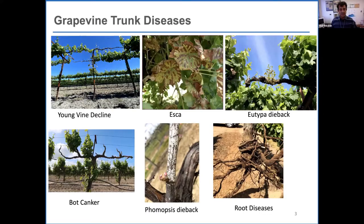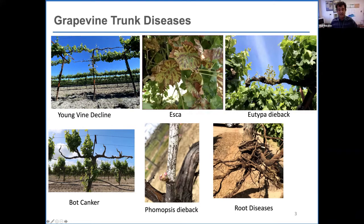Some general common information about grapevine trunk disease — I'm sure you all know, but I just want to remind you what they are and how they affect the grapevine. Grapevine trunk diseases are an umbrella of multiple diseases, including young vine decline and ESCA, Eutypa dieback, butt canker or Botryosphaeria canker, Phomopsis dieback, and some root diseases caused by the black foot disease group of pathogens.